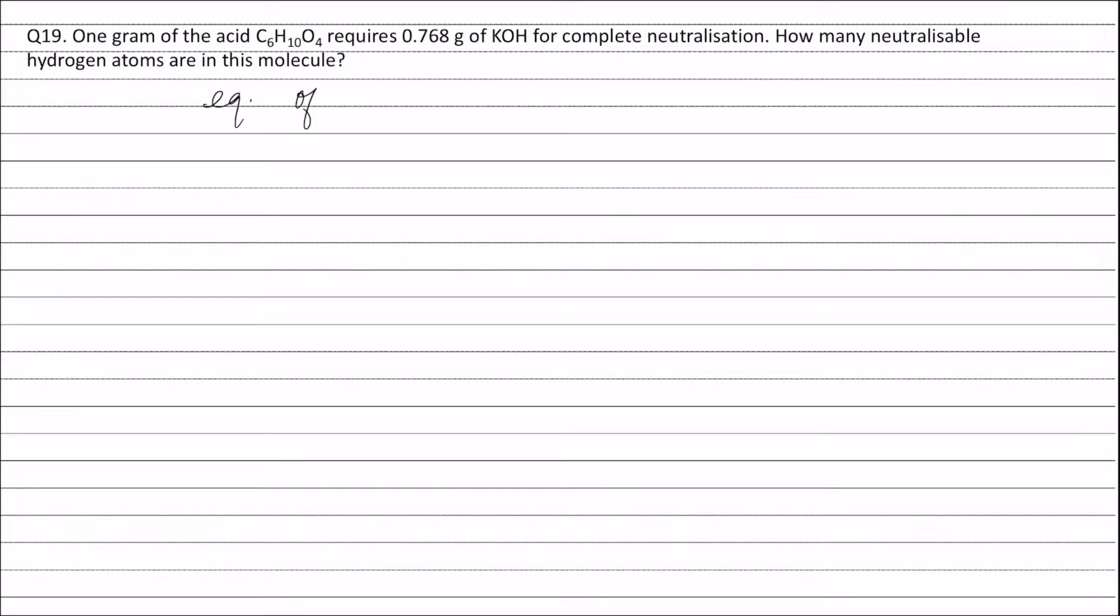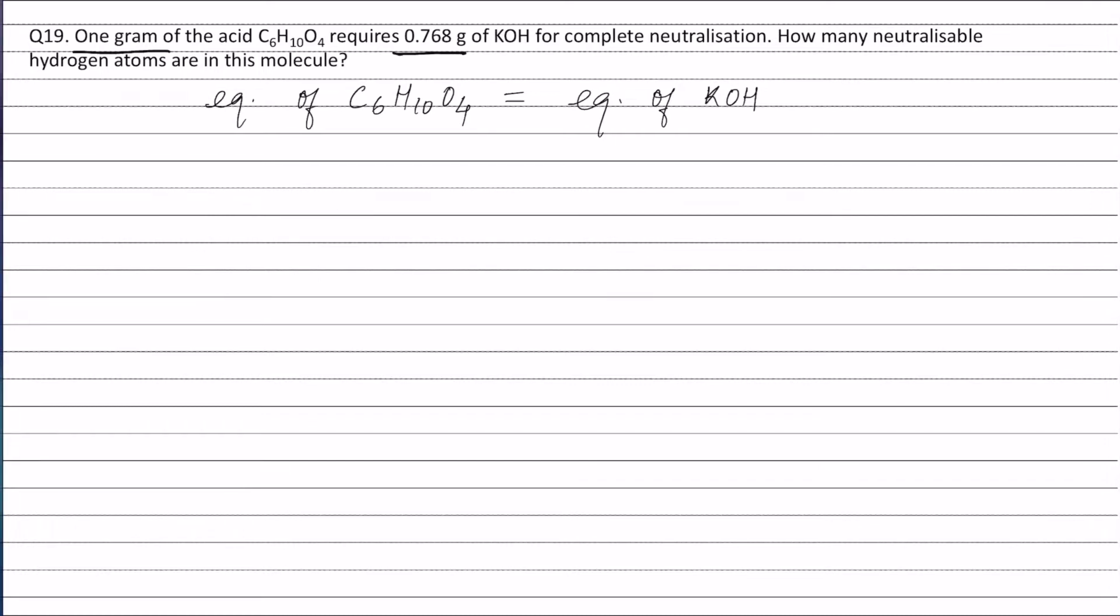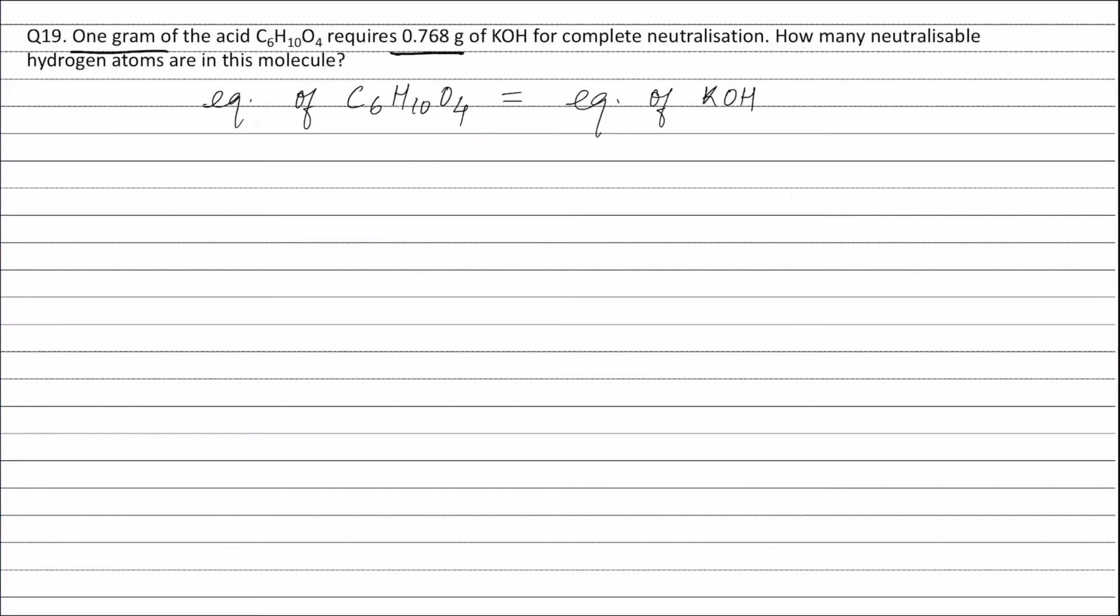Now, equivalence of C6H10O4 will be equal to equivalence of KOH. The weight of C6H10O4 is given as 1 gram and weight of KOH is given as 0.768 grams. Equivalence of C6H10O4 will be weight, that is 1 gram, divided by equivalent weight of C6H10O4.